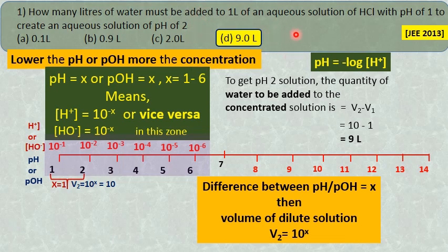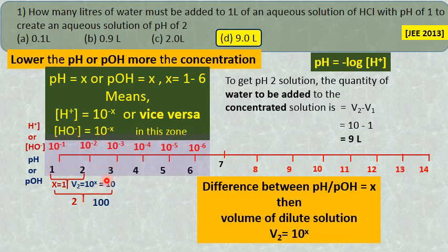Now I will also tell you for other solutions — from pH 1 or any other pH, how to make a solution of lower concentration. For example, I want to make pH 3 from pH 1. The difference between 3 and 1 is 2. Then the net volume of the dilute solution is equal to 10 raise to 2, which is equal to 100 liters.